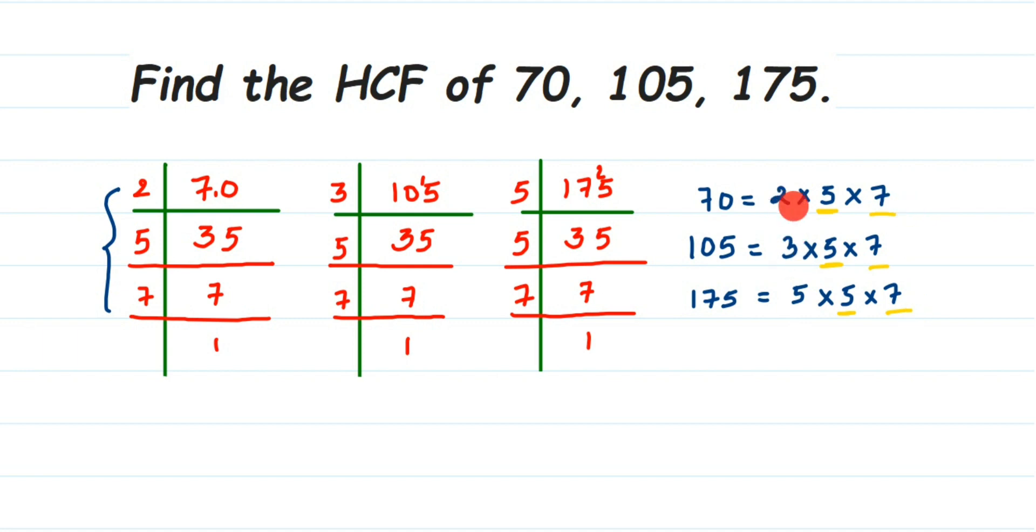Similarly, 2 is present only in 70, not in the other two numbers. So the HCF will equal the prime factors which are present in all three. 5 is present and 7 is present, so we multiply them: 5×7 is 35. So 35 will be the HCF of all these three numbers. Thank you.